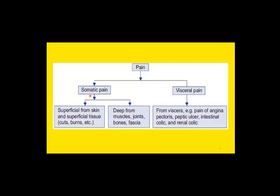Examples of somatic pain include superficial pain — such as a superficial cut with a knife or a superficial burn — and deep pain from the fascia, bones, muscles, and joints. Visceral pain examples include chest pain like angina pectoris, pain from the stomach in peptic ulcer, intestinal pain, and renal pain.